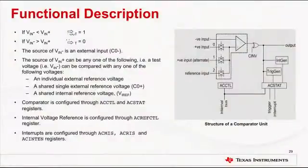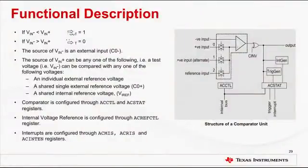An analog comparator can be configured through two status control registers: the analog comparator control and analog comparator status registers. The internal reference is configured through one control register, the analog comparator reference voltage control. Interrupt status and control are configured through three registers: the analog comparator masked interrupt status register, analog comparator raw interrupt status register, and analog comparator interrupt enable register. Typically, the comparator's output is used internally to generate an interrupt as controlled by the ISEN bit in the ACC control register.